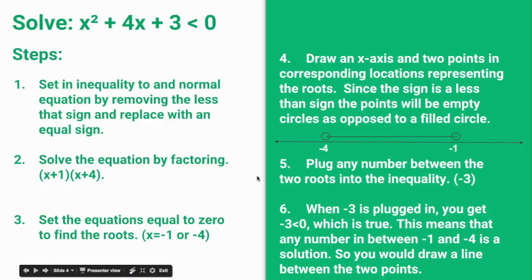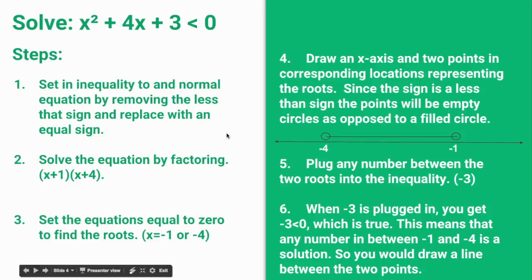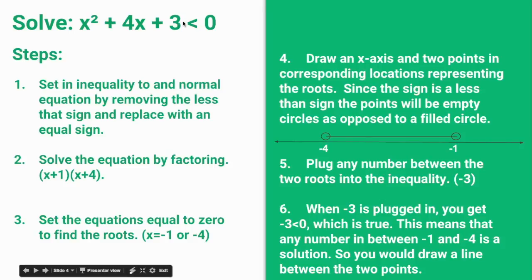The next problem is x squared plus 4x plus 3 is less than 0. This problem already has all of the variables on one side, but this time it is an inequality. So what you have to do is remove the inequality first, set it as an equation, then repeat the last steps and factor it.